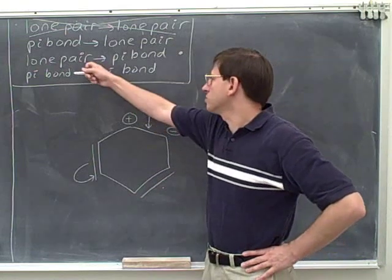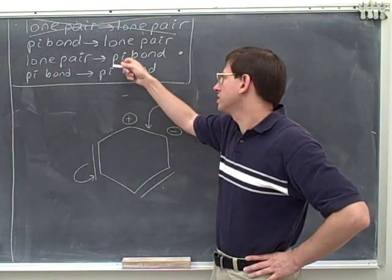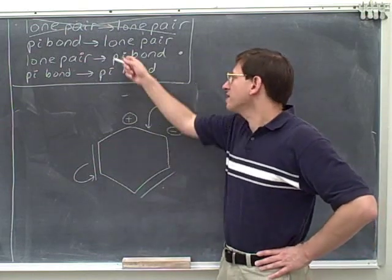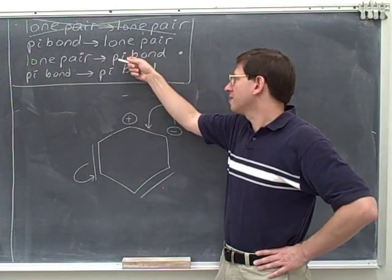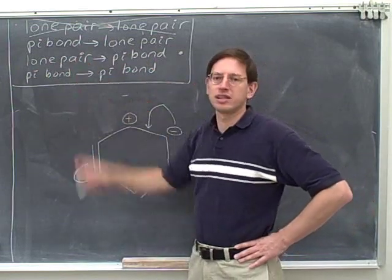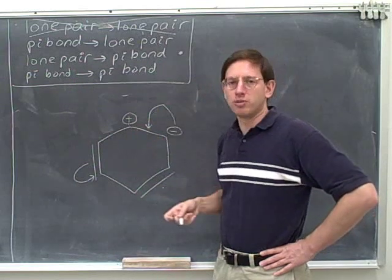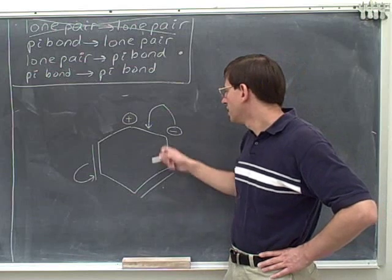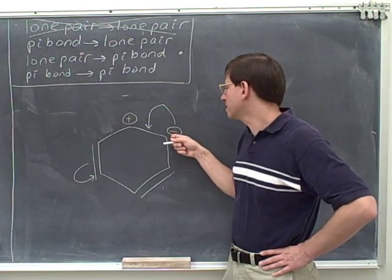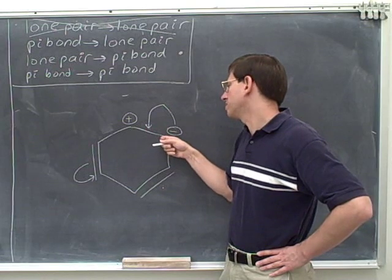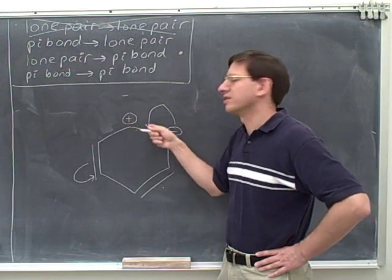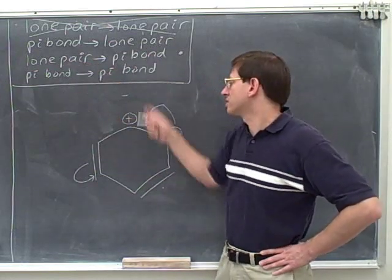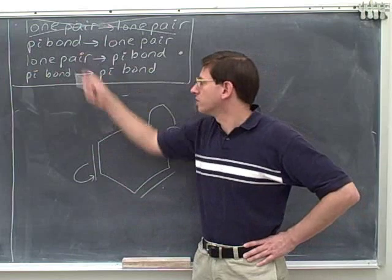What does it take to move the lone pair so that the new pi bond is as close as possible to the original lone pair? Notice that the pi bond should be shared by the atom that originally had the lone pair. The new pi bond that you're forming should be shared by the atom that originally had the lone pair. For example, notice here — this carbon originally owned this lone pair, and once we make this change, this carbon is still going to be sharing that pair in this pi bond. That's the way to get a pi bond that's as close as possible to the original lone pair.